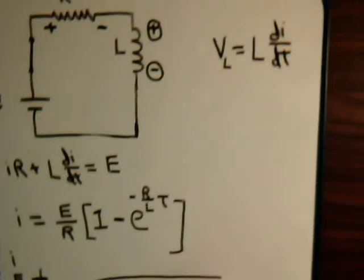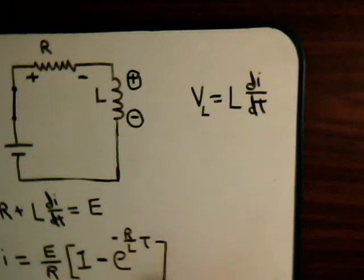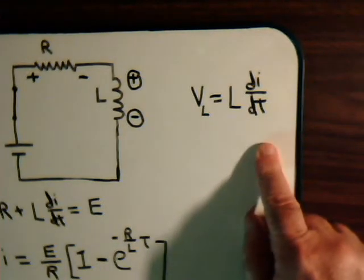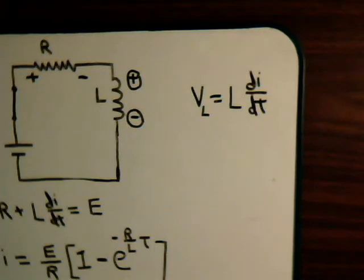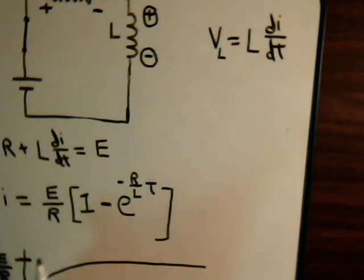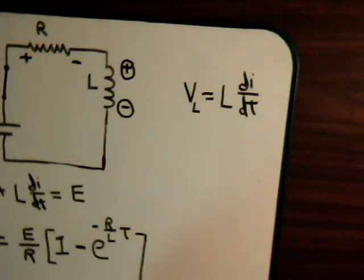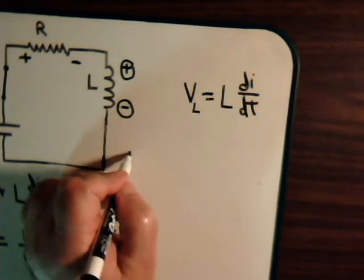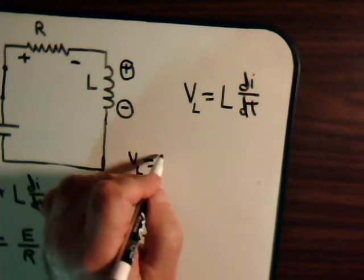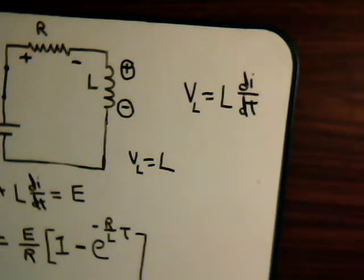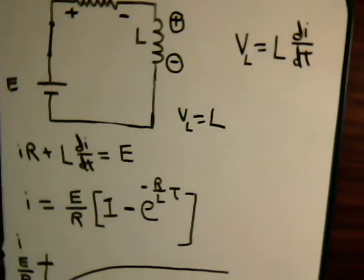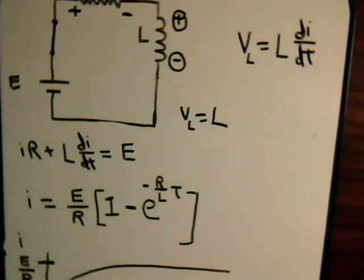Now what about the voltage drop across the coil? That is equal to the inductance times di/dt. Well, we know what i is. That's this. So we can take the derivative of this to get this expression. So V_L will equal L times the derivative of this. Of course, this is one, so the derivative of that is zero.